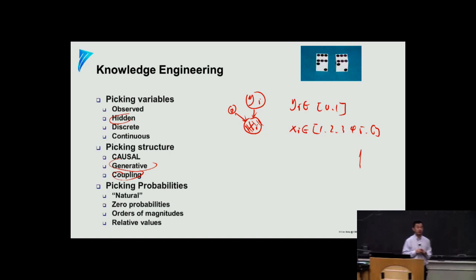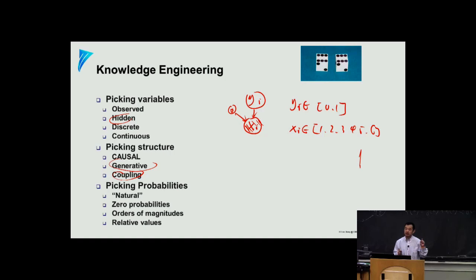Frequentists don't treat parameters as random variables — they treat them as something unknown. Philosophically, unknown means I need to estimate it. When given different numbers of observations, you may arrive at a different estimation, which is still somewhat random. But these are just nomenclature differences. Later in the class we'll deal with the case where alpha is a random variable and how to handle that. But today for pedagogical purposes we'll assume the simplest case.